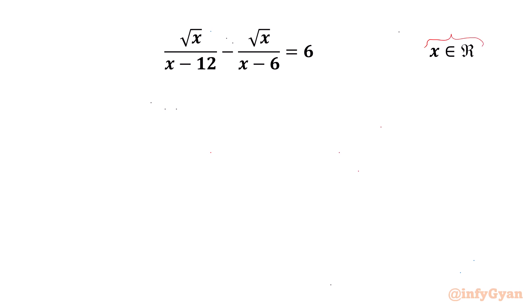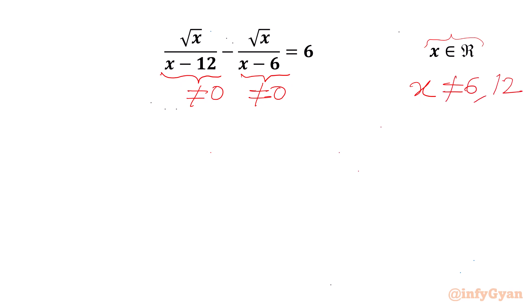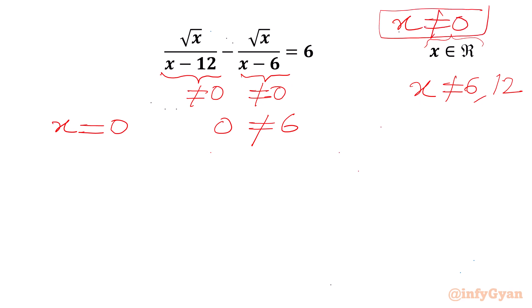Let's get started by writing that our denominators cannot be equal to 0. So x cannot be equal to 6, and x cannot be 12. Now I will check our equation at x equal to 0. The LHS will become 0, but RHS is 6, which is not true. So we can conclude x cannot be equal to 0 for our given equation.